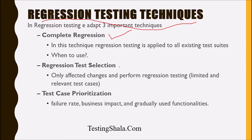The second important technique is selective regression test cases. Here, we only concentrate on the affected changes. Basically, what we have to do is work with the development team and look at which areas the code has been updated. When the code has been updated, we should look into the appropriate requirements and map appropriate test cases to those requirements.